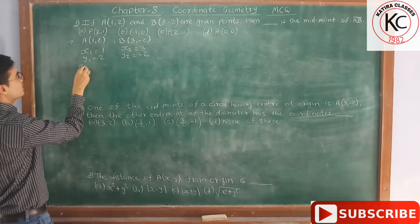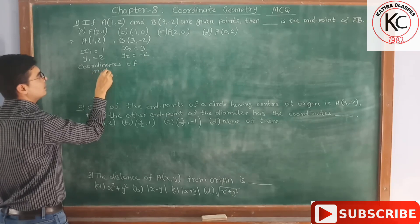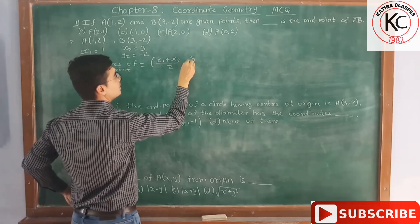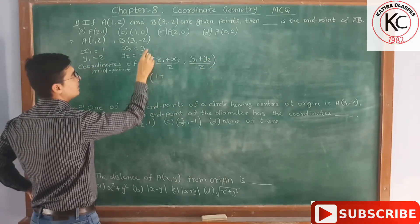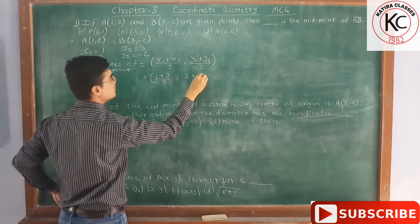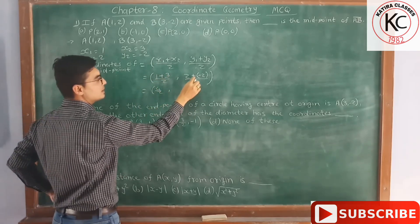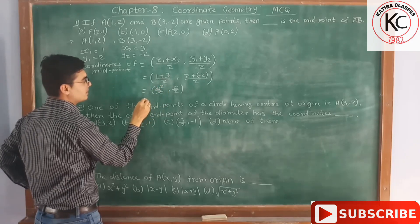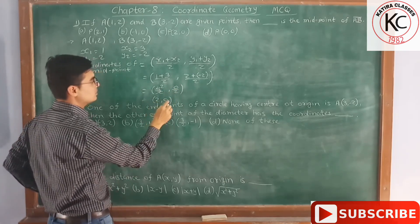So let's write down the formula. Coordinates of midpoint: x-coordinate is (x1 + x2)/2 and y-coordinate is (y1 + y2)/2. Value of x1 is 1, x2 is 3, so (1+3)/2 = 4/2 = 2. For y: (y1 + y2)/2 = (2 + (−2))/2 = 0/2 = 0. So the answer is (2, 0), which is option C.